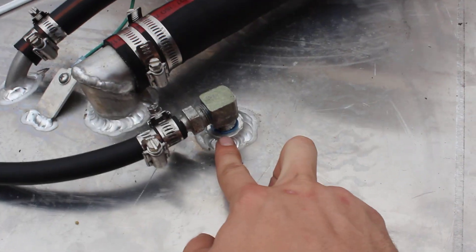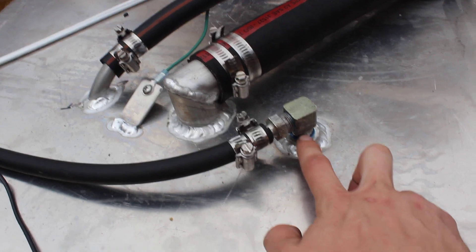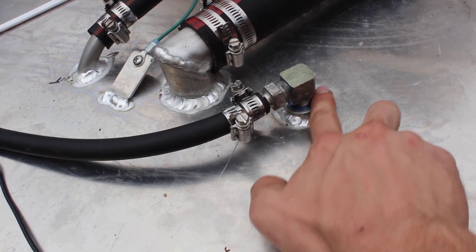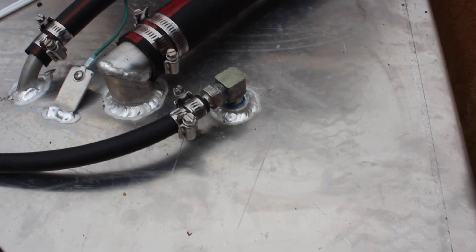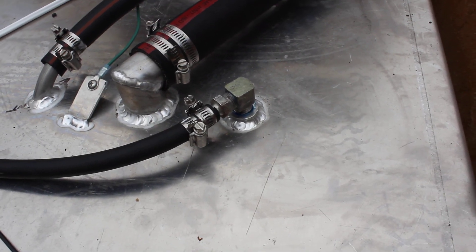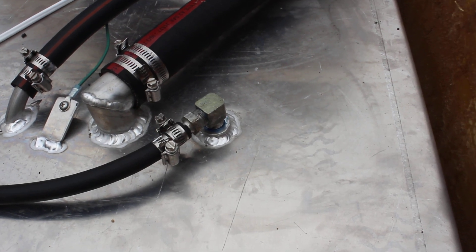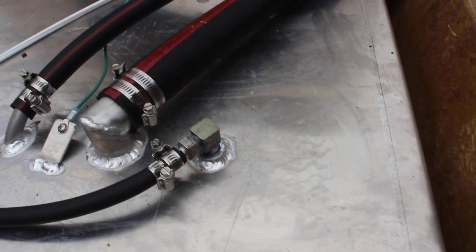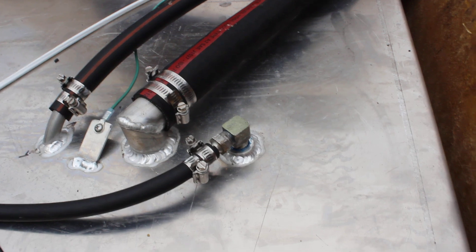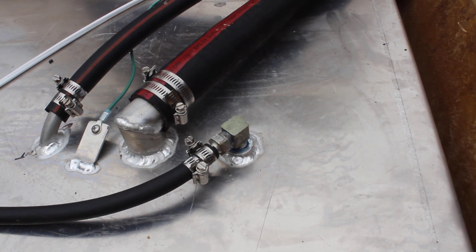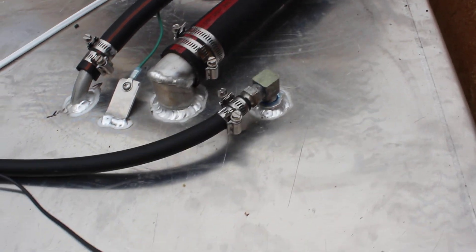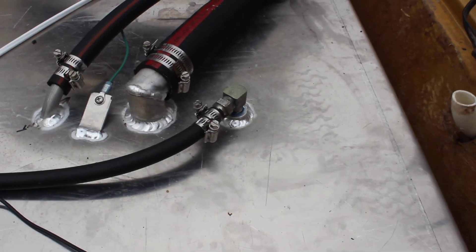Down here you don't want to use Teflon tape when you're putting in these fittings. One of the best things you can do is just use Blue Loctite, the removable kind, and that will actually seal up the threads pretty good and ensure no little pieces of Teflon tape go through your fuel system. And don't use silicone because that's going to break down with the gasoline.